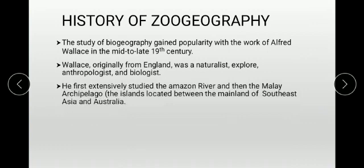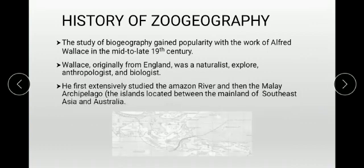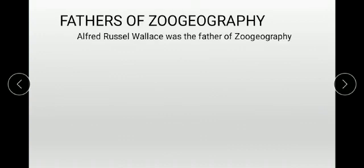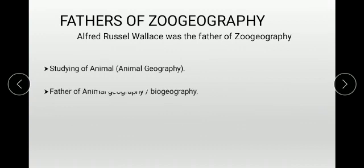Alfred Russell Wallace was the father of zoo geography. We call Wallace the father of zoo geography because of his drawing of animal geography. He is recognized as the father of animal geography and biogeography, and he co-discovered the theory of natural selection.